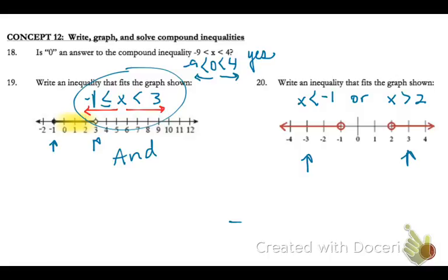So x is less than 3 and x is also at the same time greater than or equal to negative 1. This one, they can't happen at the same time, so x has to be less than negative 1 or x has to be greater than 2.